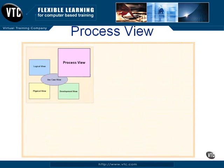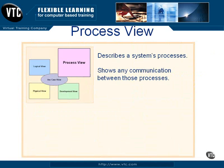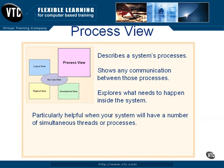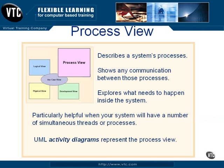Next is the process view. This view describes, not surprisingly, a system's processes. The process view shows any communication between those processes, and it explores what needs to happen inside the system. The process view is particularly helpful when your system will have a number of simultaneous threads or processes, and the UML diagram that represents the process view is the activity diagram.